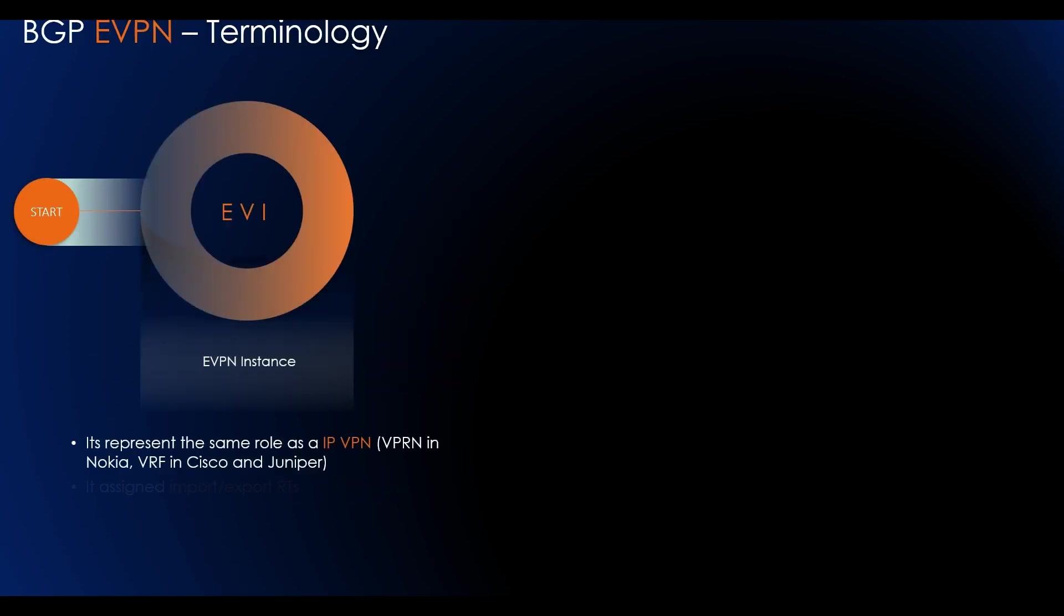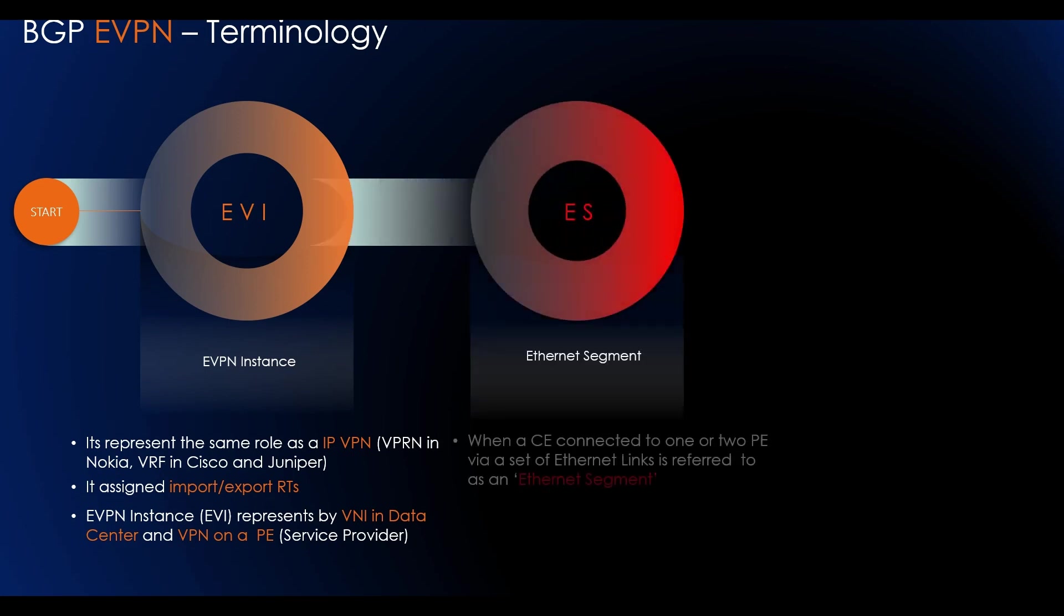EVPN instance represents the same role as IP VPN, similar to VPRN in Nokia, VRF in Cisco and Juniper. It assigns import and export RTs. EVPN instance represents VNI in data center and VPN on a PE.